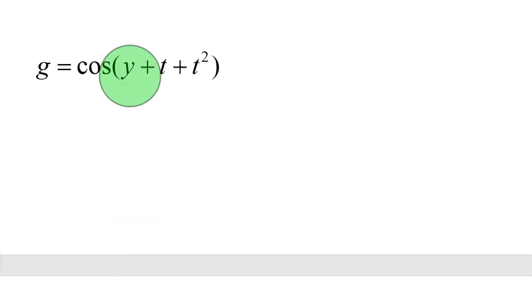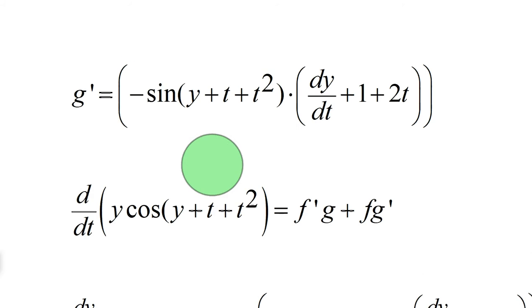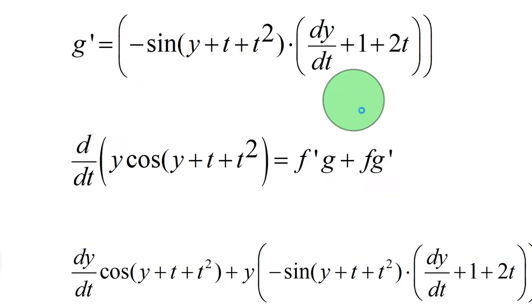g, since it's cosine of y plus t plus t squared, we're going to have to use a combination of implicit and the chain rule. So it'll be the derivative of the outside, which would be negative sine. Derivative of cosine is negative sine of y plus t plus t squared. Then we want to take the derivative of the inside, multiplied by the derivative of the inside. Derivative of y is dy dt. d dt of t is 1. And the derivative of t squared is 2t.